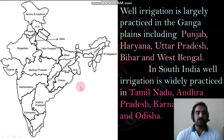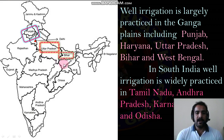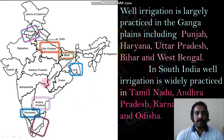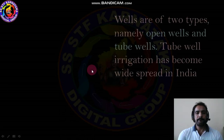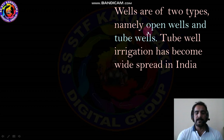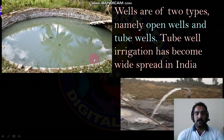Well irrigation is largely practiced in the Ganga plain, including Punjab, Haryana, and Uttar Pradesh. There are two types of wells: open wells and tube wells. Recently, open wells have been declining because of less rainfall, so tube wells are more common now.